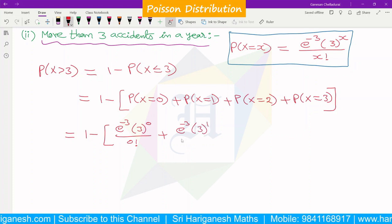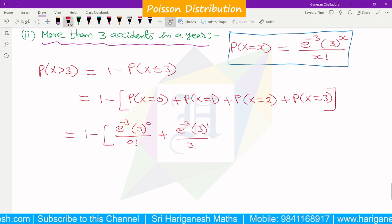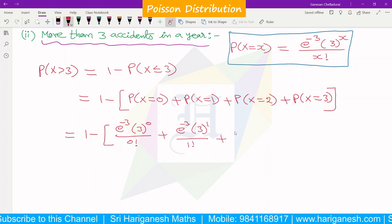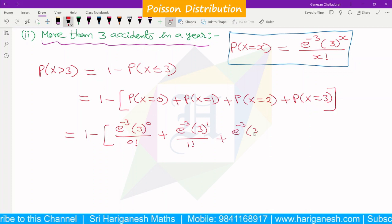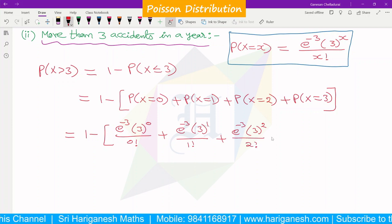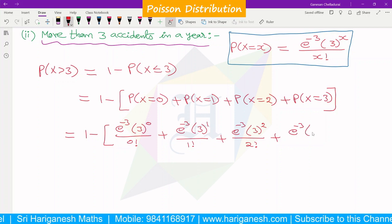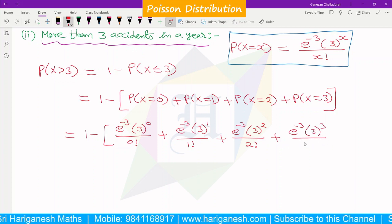So first, 1 minus x=0 gives e^(-3) × 3^0 / 0!, plus x=1 gives e^(-3) × 3^1 / 1!, plus x=2 gives e^(-3) × 3^2 / 2!, plus x=3 gives e^(-3) × 3^3 / 3!.